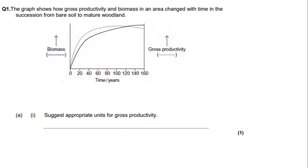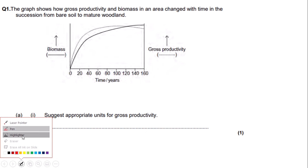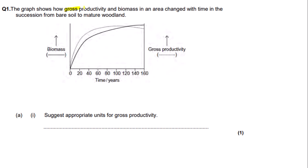Now I'm going to move on to some exam-style questions. The graph shows how gross productivity and biomass in an area change with time in the succession from bare soil to mature woodland. The first thing to notice is that it's asking about gross productivity — that is the rate of gross primary production, meaning all the chemical energy stored in plants without respiratory losses. On the x-axis we have time in years; the dotted curve represents gross productivity and the solid curve represents biomass.